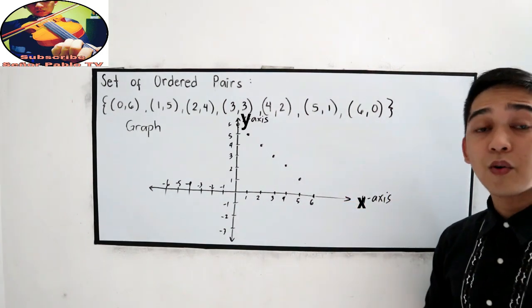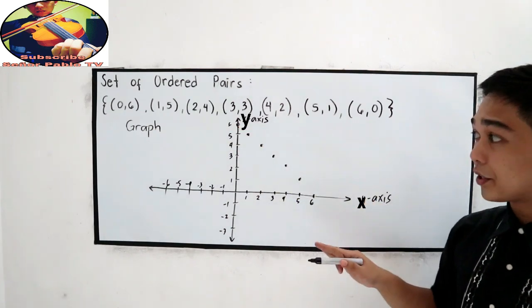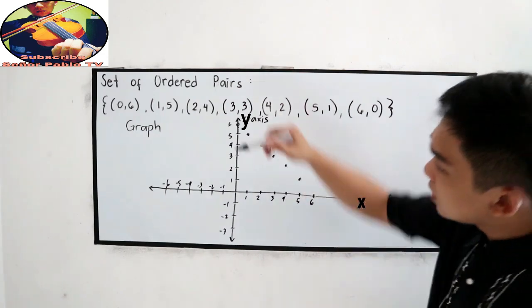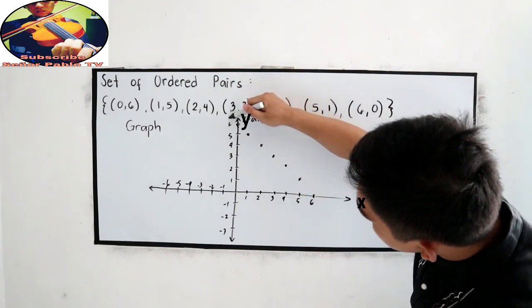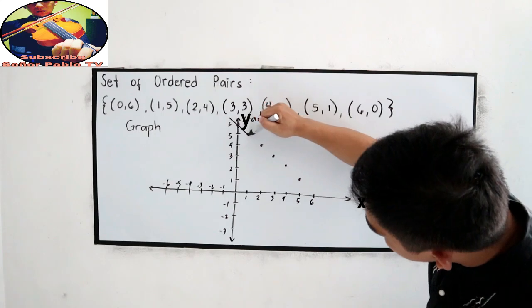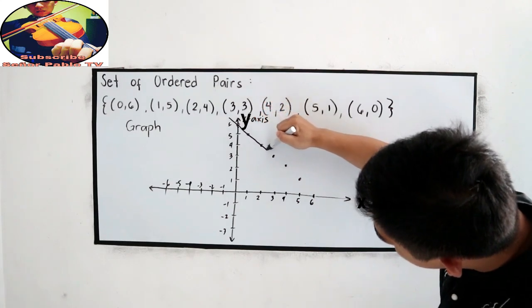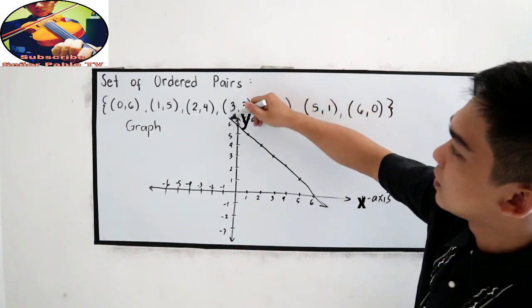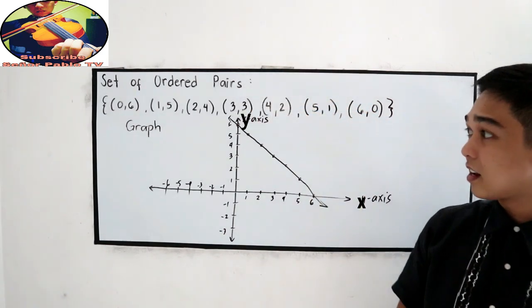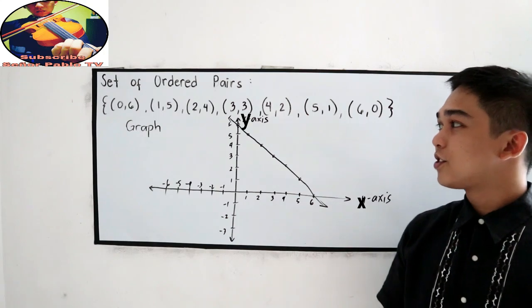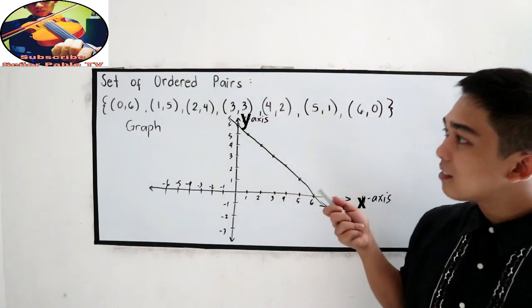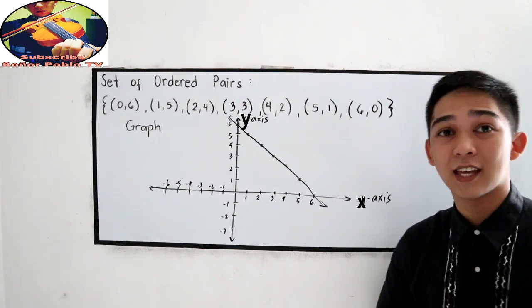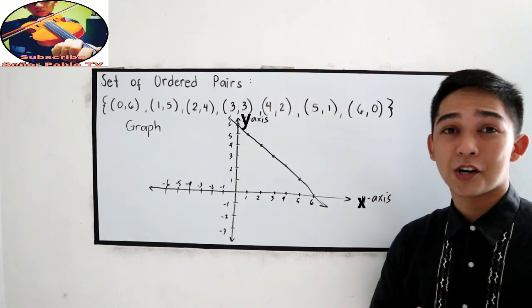So, this is now our plotted ordered pairs. We are plotting in our rectangular coordinate system. Then, we can connect the dots or the points. This is now our graph, and that is a linear relation. So, this is how to plot the different points using our graph, and that can also be represented as our relation.